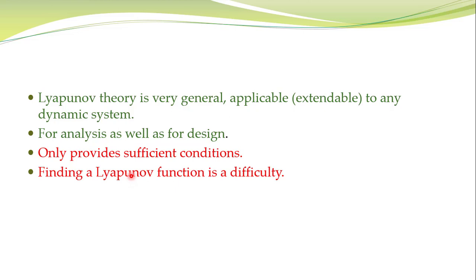For example, if we take any positive definite function and its time derivative along system trajectories comes out to be positive definite, we cannot give any conclusion, because it gives only sufficient conditions. Therefore, we have to try some other positive definite function, and that is basically a difficulty in Lyapunov theory. In today's lecture, we are going to talk about some guidelines which can be utilized for the selection of a candidate Lyapunov function.